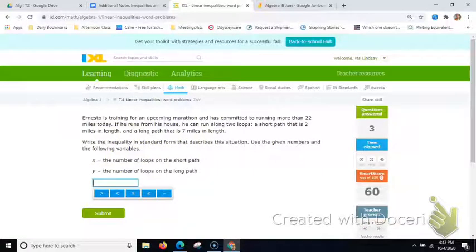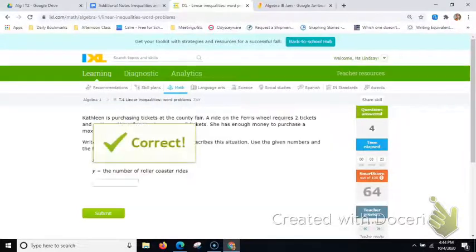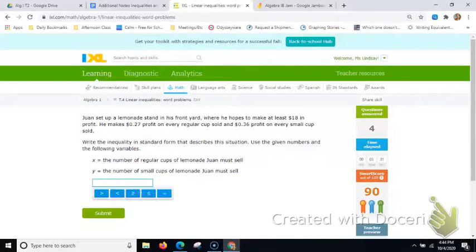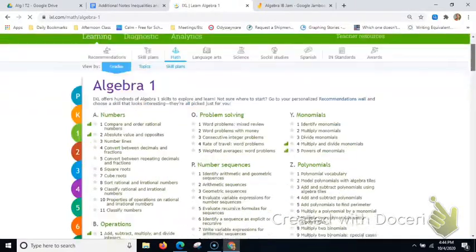He's committed to running more than 22 miles today. If he runs from his house, he can run two loops. A short path that is two miles and a long path that is seven miles. So he gets two miles for each short path. That's my 2x. Plus seven miles for each long path. That's my 7y. And he is committed to running more than 22 miles. So 22 itself isn't good enough for him. He wants to be greater than 22 miles. So things don't get harder until you get to the challenge zone. And then it's just got cents instead. So still not that bad. So remember, you only need to go to 80.